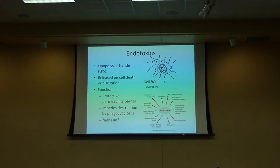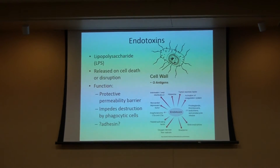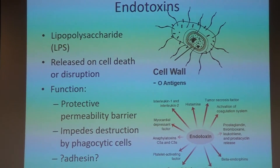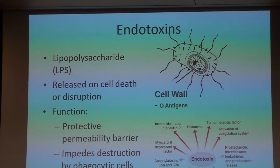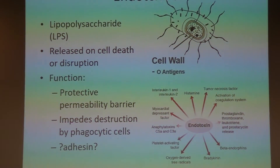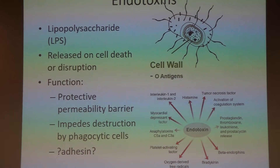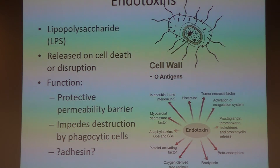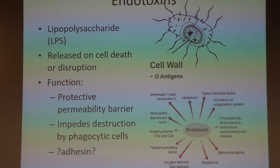What do these endotoxins do in the cow? They're usually released upon cell death or disruption. Their function includes acting as a protective permeability barrier and helping the bacteria elude the immune system and destruction by phagocytic cells, and they may have some adhesive components. However, once the bacteria die or break apart, these endotoxins are released and are a powerful stimulant of the immune system. They initiate a complement cascade, and we see severe symptoms — release of tumor necrosis factor, prostaglandins, vasodilation, swelling, heat, fever, collapse, systemic or septic shock.